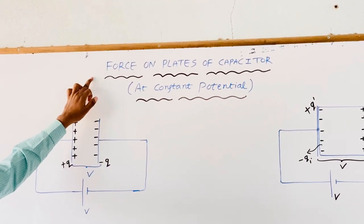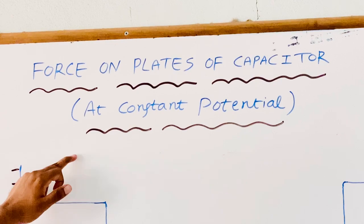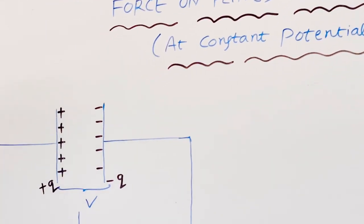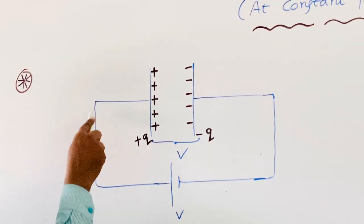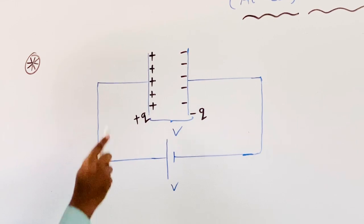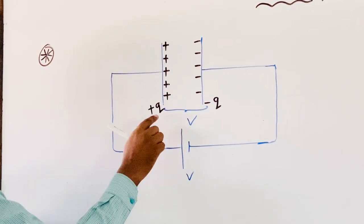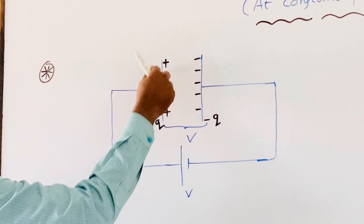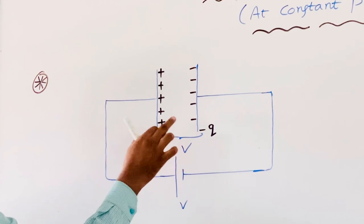That is force on the plates of a capacitor when the capacitor is maintained at constant potential. First of all, here you are seeing one capacitor. This capacitor is previously not filled by any dielectric. One plate is connected to the positive terminal and one more plate is connected to the negative terminal. Due to this battery, this capacitor is charged to Q. Now, we can calculate the force experienced by either plate of the capacitor due to the electric field set up by the other plate.